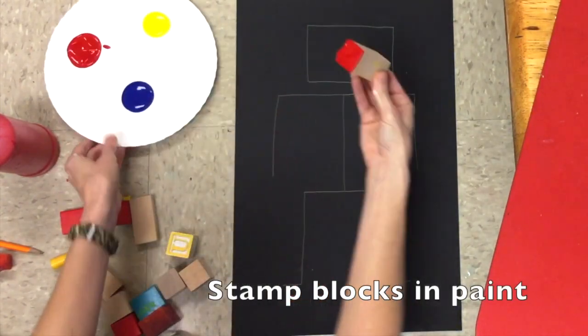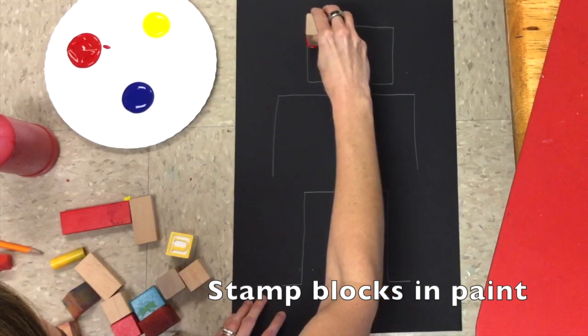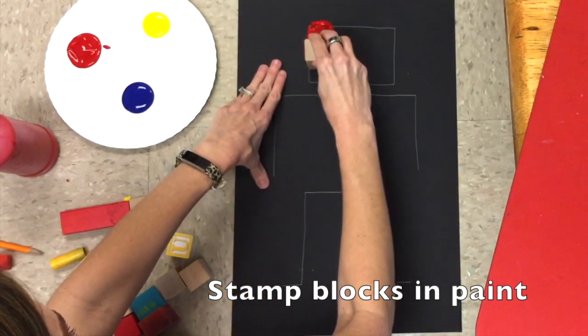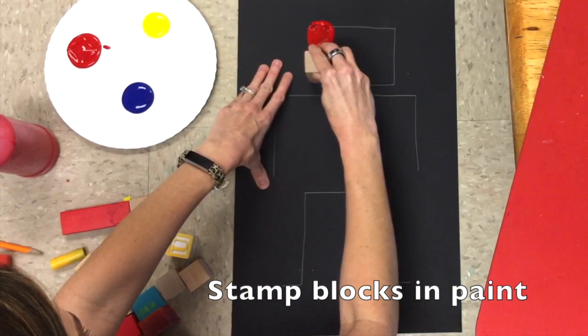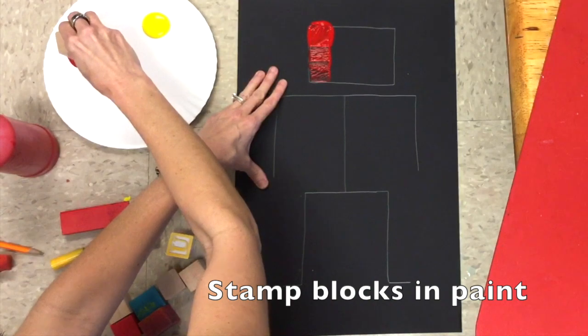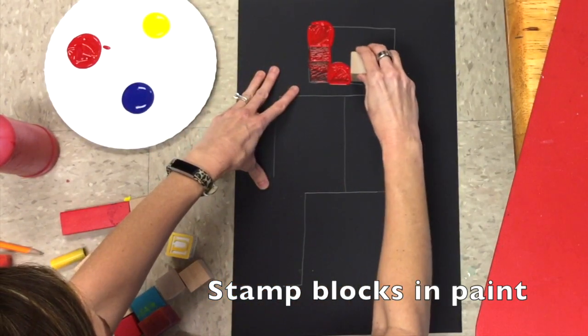Now you're going to stamp your blocks in any way you'd like, and you can use any colors. We just want to remember that we never mix our colors. Because what's going to happen? It makes brown. And who wants a brown robot? This is a primary color robot.